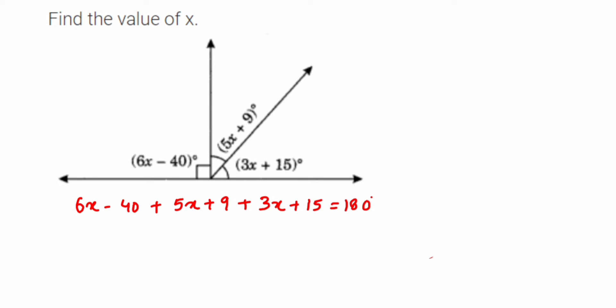First, we're going to add up the variables. So 6x plus 5x is 11x, plus 3x is 14x. So 14x. Then next, we're going to add the constants. So minus 40 plus 9 is minus 31. Minus 31 plus 15 will be minus 16.